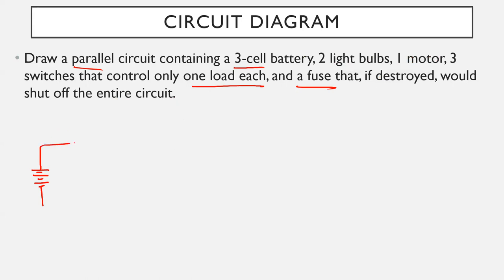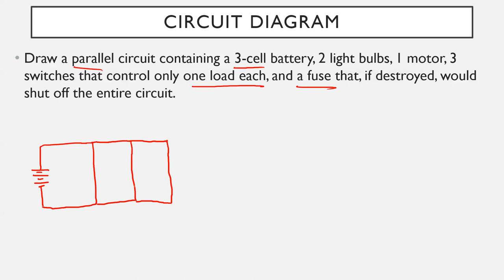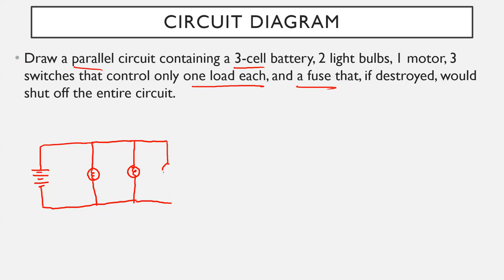We want two light bulbs and one motor, with three switches that each control only one load, which indicates we should put each load in its own separate parallel. I'll draw three parallel branches. A light bulb is a circle with a loop-de-loop in the middle — I'll put one light bulb in the first parallel and another in the second. A motor is a circle with about three dots going through it — I'll put that in the third parallel.